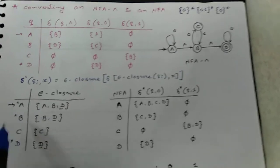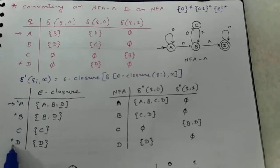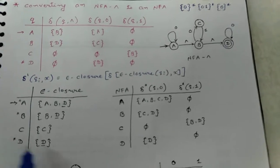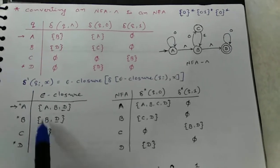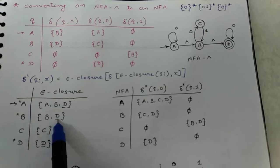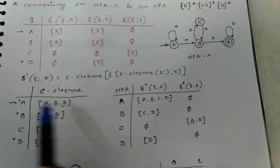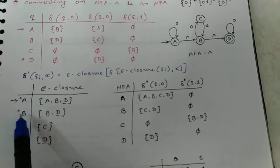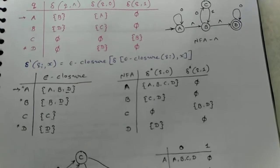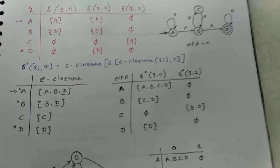First we find the epsilon closure of the input state. Here A is the starting state and D is the final state. Now for the final state, whichever states D appears in will also be final states.